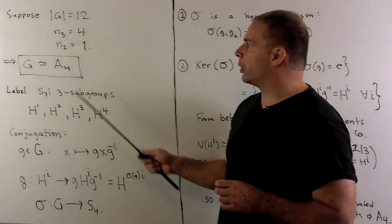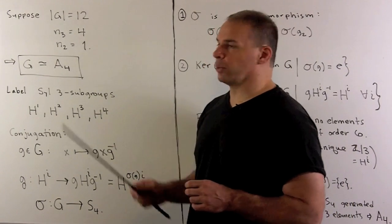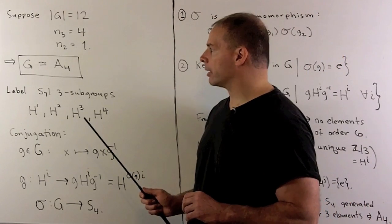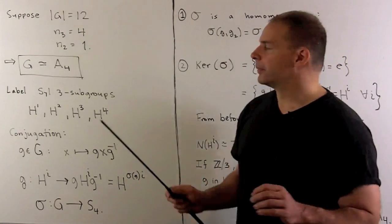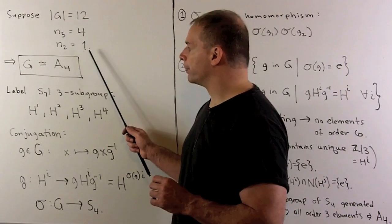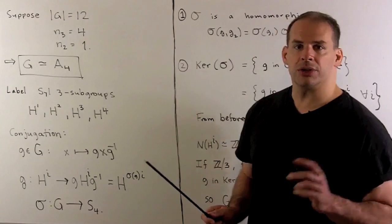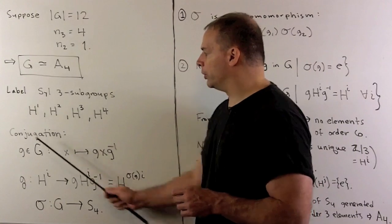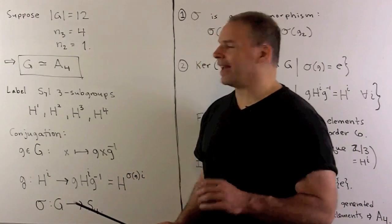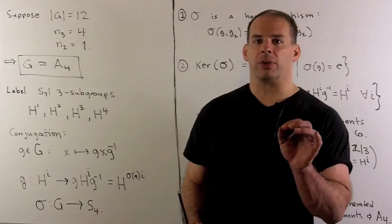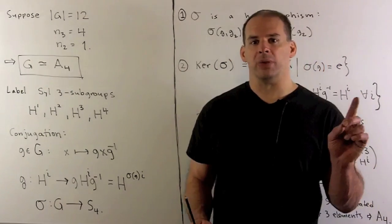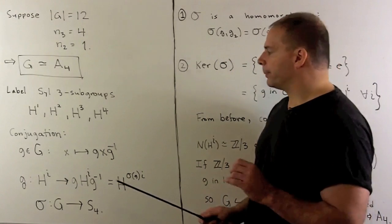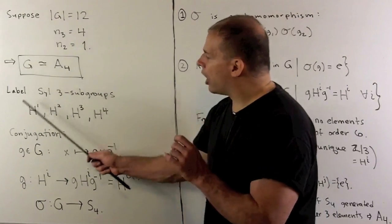Now let's go in the other direction. We suppose the order of G is 12, n sub 3 is equal to 4, n sub 2 is equal to 1, and we want to show that G is isomorphic to A_4. For the isomorphism, we need to find four objects to permute. For that, we can use our Sylow 3-subgroups — let's call those H_1, H_2, H_3, and H_4. If we want to permute these, we can take a group element and conjugate. Conjugating a Sylow 3-subgroup gives back another Sylow 3-subgroup, and conjugating by g inverse undoes the map. So for each group element, we get a permutation on these four objects.